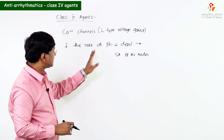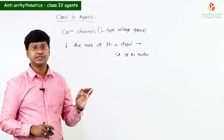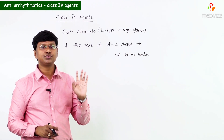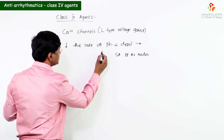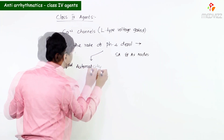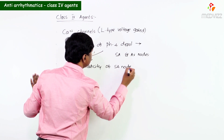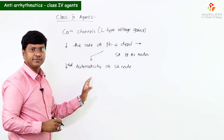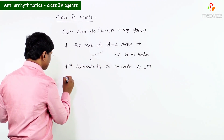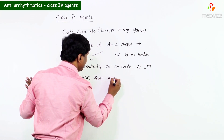Because they decrease the rate of phase 4 depolarization in the SA node and AV node, this results in decreased automaticity of the SA node and decreased conduction through the AV node.